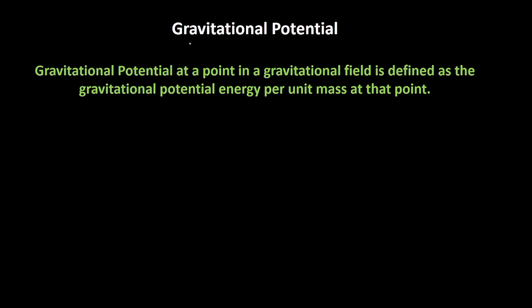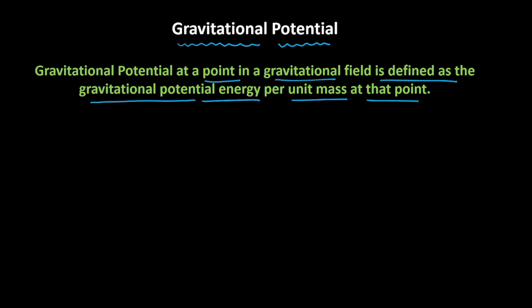Hello there. In this video, we will be learning about gravitational potential. Gravitational potential at a point in the gravitational field is defined as the gravitational potential energy per unit mass at that point. Gravitational potential is represented with V, and that is equal to U divided by M.